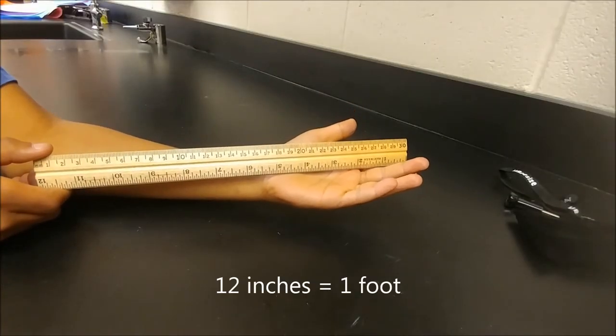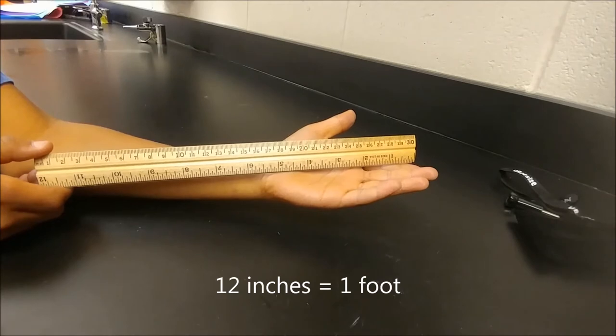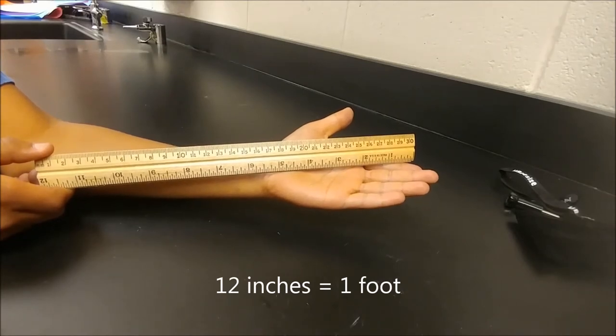There are 12 inches in a foot. If you can remember that, then you know that the side with more than 12 inches is the metric side.